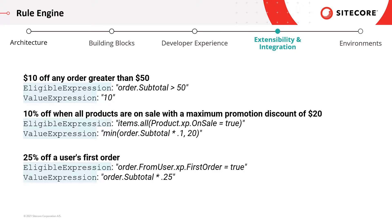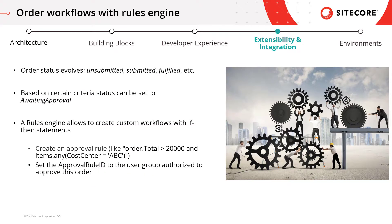Every promotion will have two rule expressions: an eligible expression, which evaluates the current state of the order and returns true or false indicating whether the promotion can be applied, and a value expression, which evaluates the order and returns a monetary value subtracted from the order subtotal. The rule engine can also be used to extend platform behavior. In its simplest form, it's an if-then statement provided from the outside rather than baked into the engine itself. For example, if you want every order over $20,000 to require approval from a manager, you create a user group containing all approving managers, then create a new approval rule, setting the approving group ID and the approval rule expression.